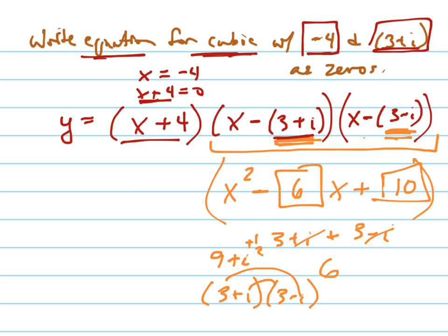There you go. That is what I would get if I multiplied those out. It's much shorter and easier to do it that way. That makes sense. Now we're still not done, because we still have to multiply this out by x plus 4, but that's a lot easier to do.